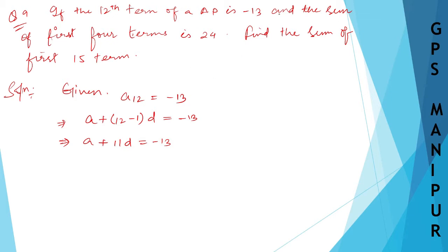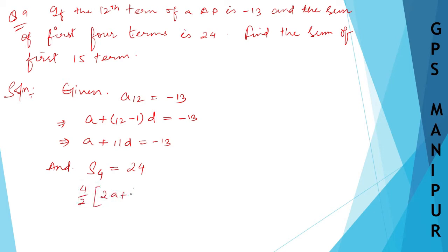The 12th term gives us equation 1, and S4 is given as 24. Using the sum formula: S4 equals N divided by 2 times 2A plus N minus 1 times D, that is 4 divided by 2 times 2A plus 4 minus 1 times D equals 24.